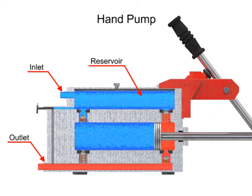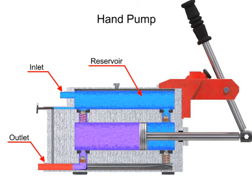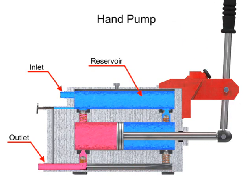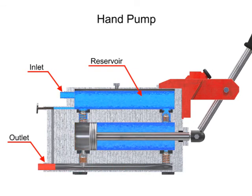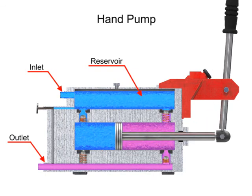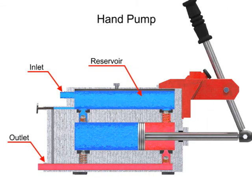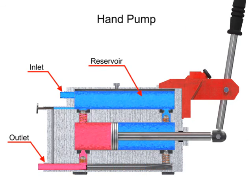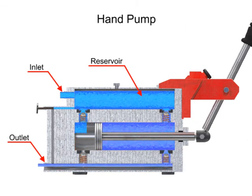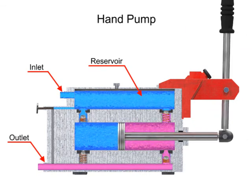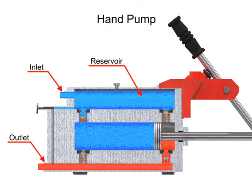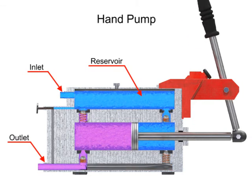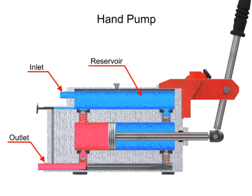Double-acting hand pumps are more efficient, allowing fluid to both enter and discharge on both strokes of the piston. Moving the pump handle in either direction allows fluid to be drawn in from the reservoir and discharged via the outlet ports. Check valves in all locations prevent fluid backflow.